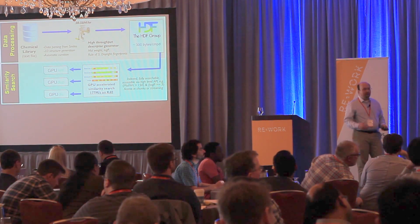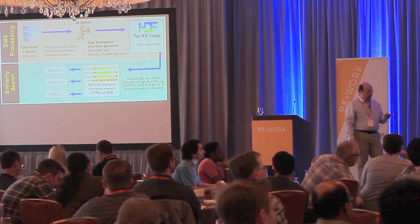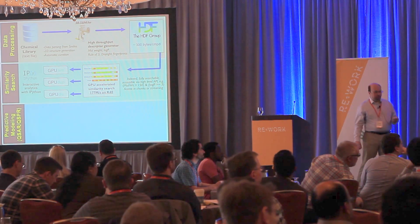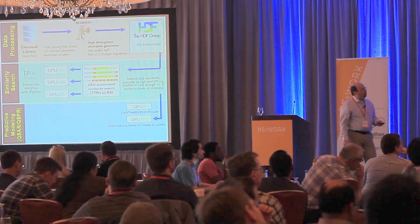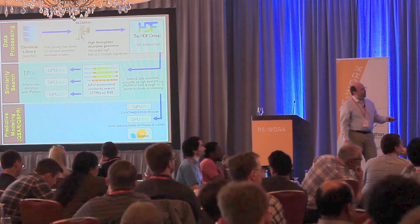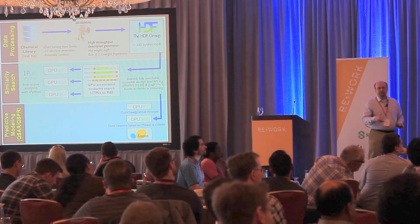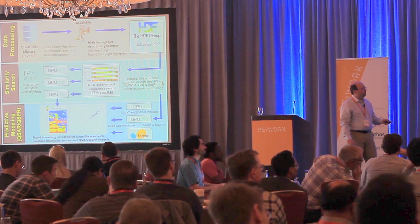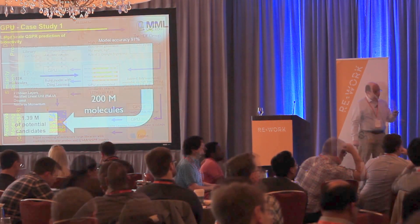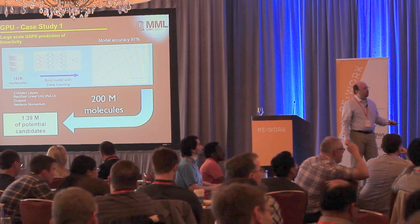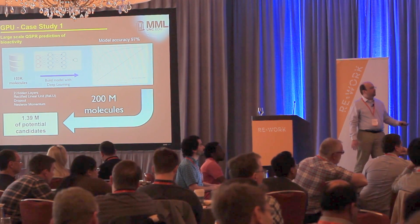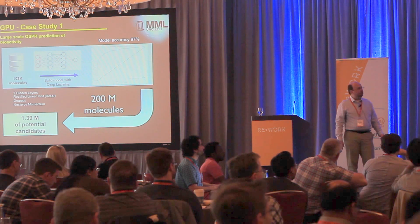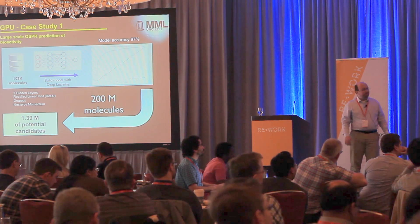The third part combines predictive modeling using off-the-shelf machine learning libraries and deep neural nets based on Theano, which runs on GPU. All of this combined allows us to do truly high-throughput screening of very large chemical datasets. We screened a 200-million-compound library — the largest we could get our hands on — and identified 1.4 million molecules that could potentially be candidates for inhibitors.